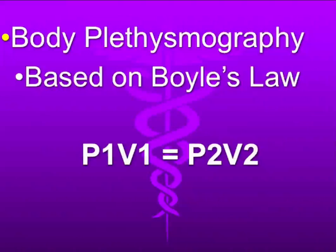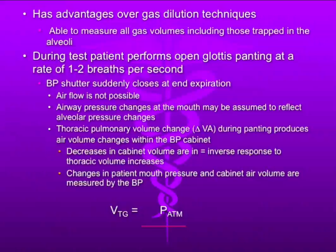Body plethysmography is based on Boyle's Law — P1V1 equals P2V2. When you have a change in volume, you're going to have a change in pressure, and vice versa. This test is becoming the standard because it is very accurate. It does not require helium. It does not require 100% oxygen. You can measure it in a breath or two, and it's relatively easy to do. You can measure all gas volumes, including that which is trapped in the alveoli.